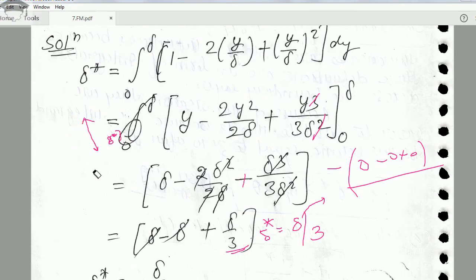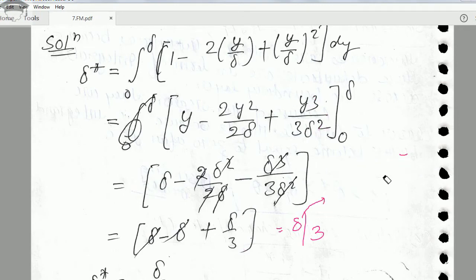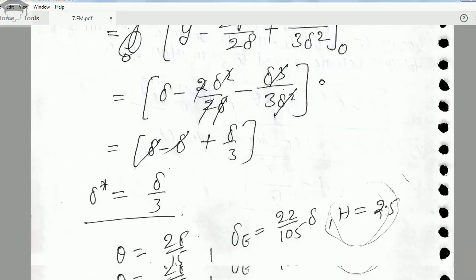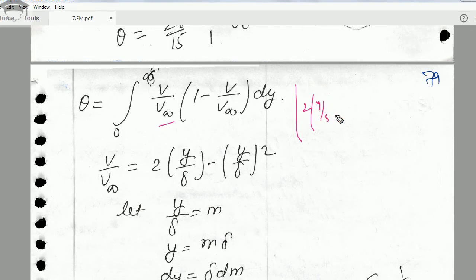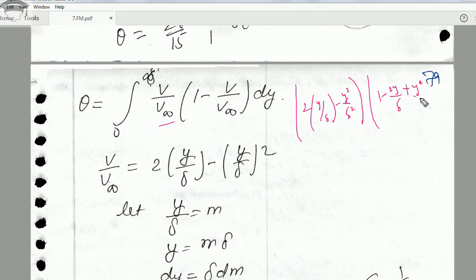Now we have to calculate the momentum thickness. Momentum thickness is denoted by θ, and it is defined as the integral from 0 to δ of (v/v∞)(1 − v/v∞) dy. We again substitute the value of v/v∞, which is 2y/δ − y²/δ², into this expression: (2y/δ − y²/δ²) times (1 − 2y/δ + y²/δ²) dy, integrated from 0 to δ.